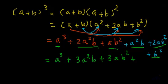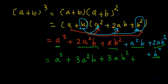The last term should be b cubed — let me correct that — because when we multiply b by b squared we get b cubed. So the last term in this expression is plus b cubed. This gives us the formula for (a + b) whole cube.